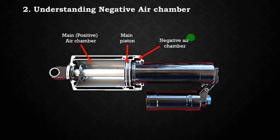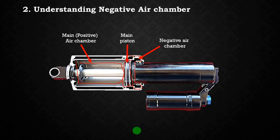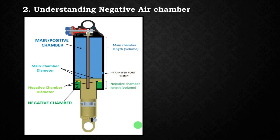The negative air chamber is basically the space behind the main piston of an air shock. Here you have the main chamber, then the piston, and the space behind the piston is the negative air chamber. In this diagram you can see the positive chamber in blue and the green zone behind the main piston is the negative chamber.